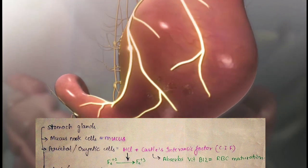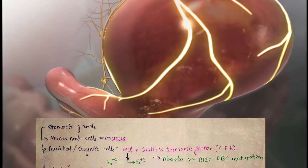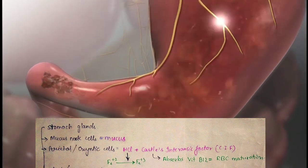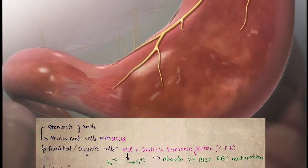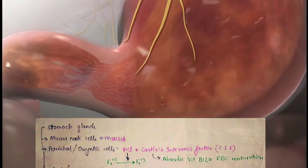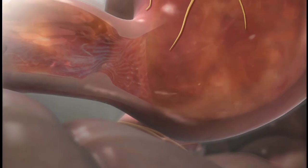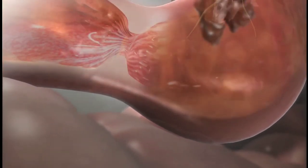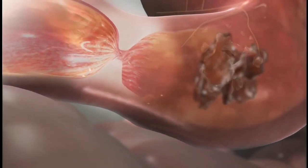Second are parietal or oxyntic cells. They secrete hydrochloric acid and Castle's intrinsic factor. HCl maintains the acidic pH which is necessary to convert ferric to ferrous. This ferrous is used in formation of hemoglobin. If HCl is absent, it leads to deficiency of ferrous which further leads to microcytic anemia. The Castle's intrinsic factor is responsible for absorption of vitamin B12, which is necessary for RBC maturation. Absence of CIF leads to macrocytic pernicious anemia.